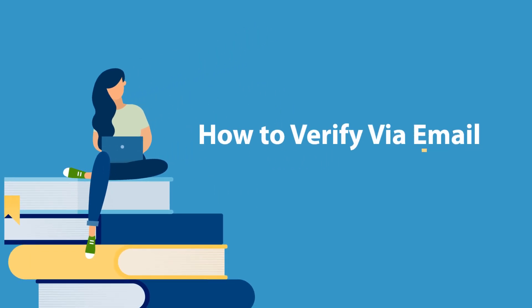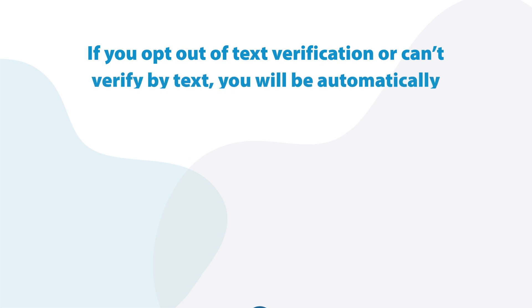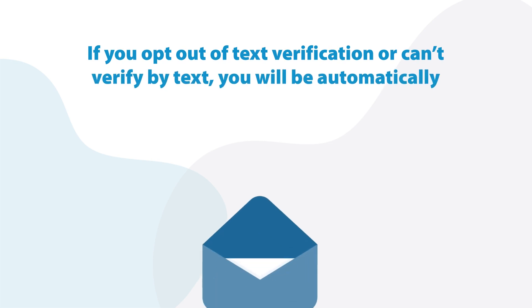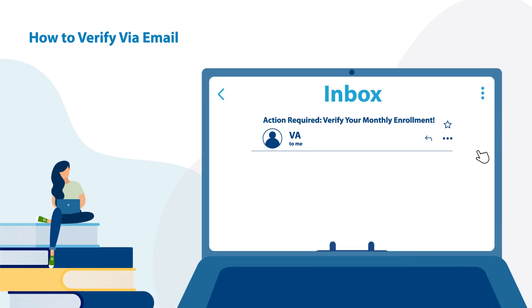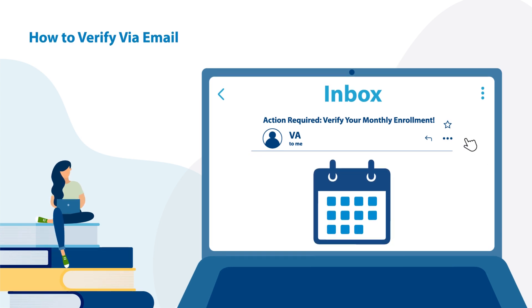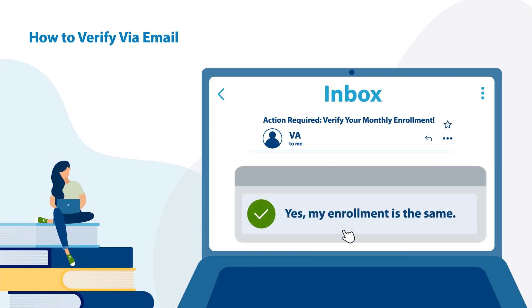Email verification is also available as an option. If you opt out of text verification or can't verify by text, you'll be automatically enrolled in email verification. Email verification is similar to text message verification. On the last day of each month, you'll receive an email requesting enrollment verification for that month. Select yes, my enrollment is the same to verify your enrollment.